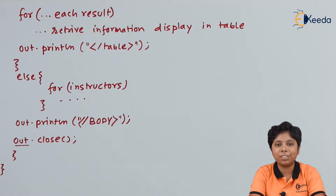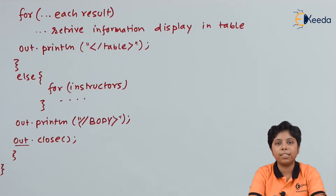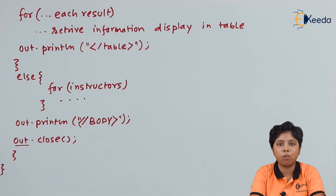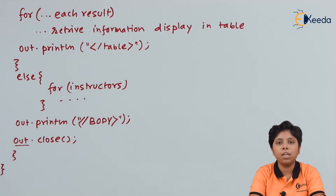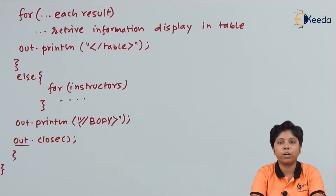Next we will talk about Java servlet sessions. A servlet session starts from one point and ends at another. For example, we have a cookie. A cookie is information we use very frequently — for instance, a username and password for logging into a social network, banking site, or any other site. We save it as a cookie so we do not need to re-enter data every time we log in.